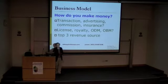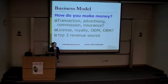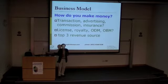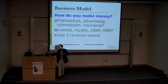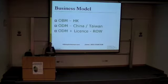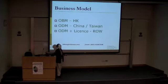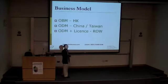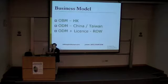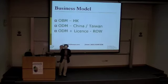Now, profit and revenue source — if you have too many, you probably don't know your business model or where your revenue comes from. Even as a social enterprise, your revenue source should be simpler. So where do you get your money from? For example: OBM — I sell through Hong Kong. Original design manufacturing — I sell through China and Taiwan because they do a lot of piracy. ODM plus license for the rest of the world.